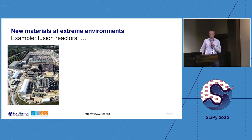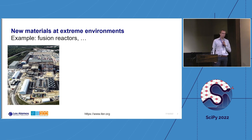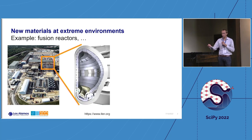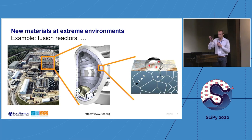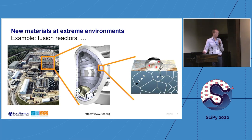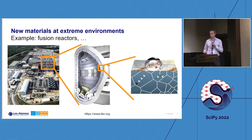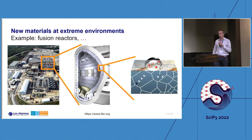Typical materials we would look at include fusion reactors being built in the ITER project. You see the building, and inside the core is where fusion is actually happening. We look at one specific material part because experiments on that side are very expensive. We want to predict material properties from simulation and thereby reduce the number of experiments needed.